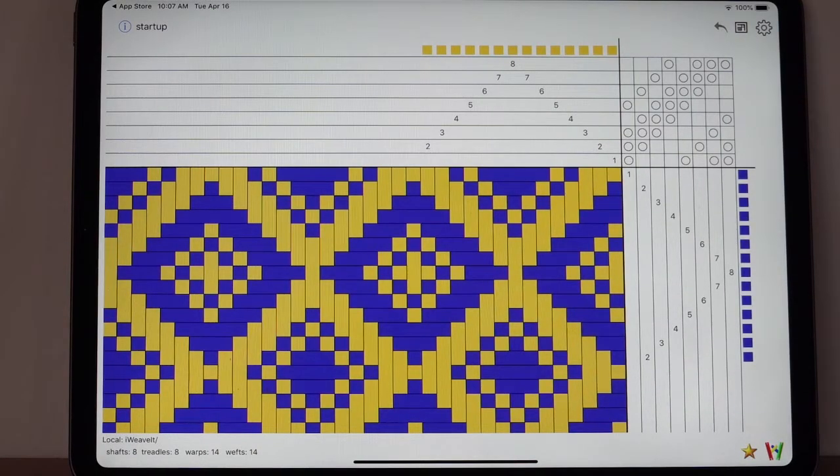After you first purchase iWeavit, or after you've loaded it onto a new device, you will want to get your add-on icons that you will see here: the treadle tracker, the design tools, and the project calculator.